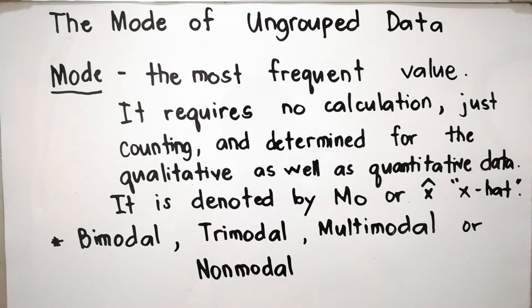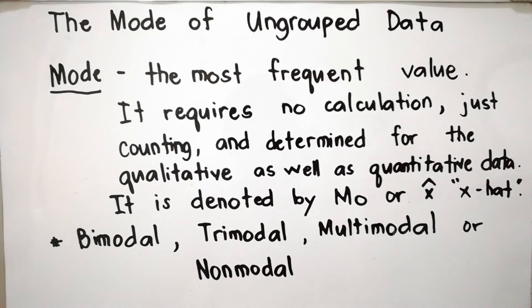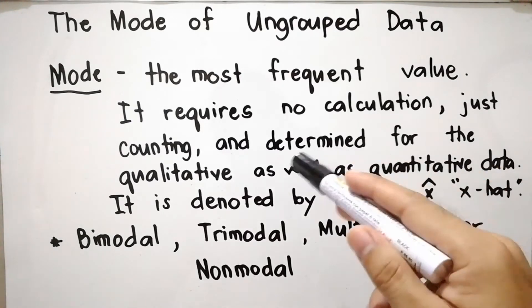Hi everyone, today we will talk about the mode of ungrouped data. When we say mode, this is the most frequent value. In a distribution, the most frequent value is the element or measure which repeated the most.